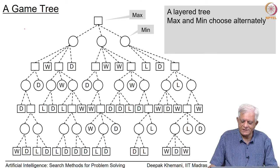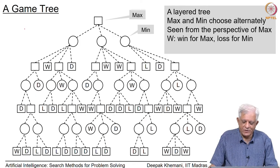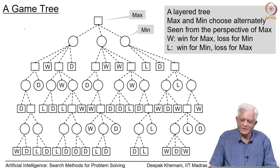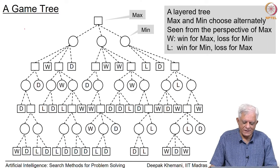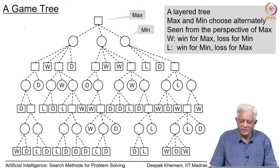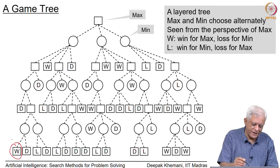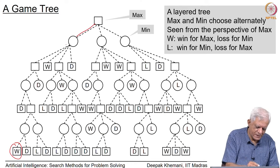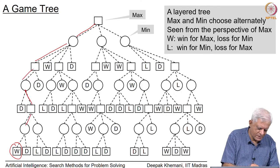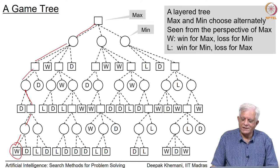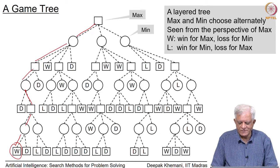Max and Min choose alternately — Max makes the first move, Min the second, and so on. We always see the game tree from the perspective of Max because we imagine we are going to write a program for Max. The leaves of the game tree are labeled with the outcome. W stands for a win for Max and loss for Min. L stands for a win for Min and loss for Max.